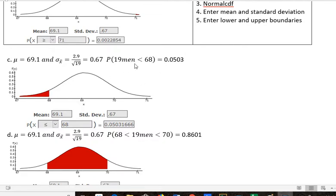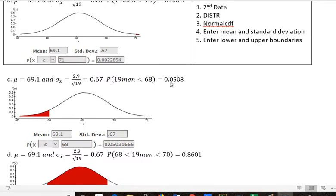And that turns out to be unusual, but not as unusual as the last one, but 5% of the population or 0.0503 would be less than 68 inches tall, given that the mean is 69.1 and the standard deviation that we're using here is 0.67.